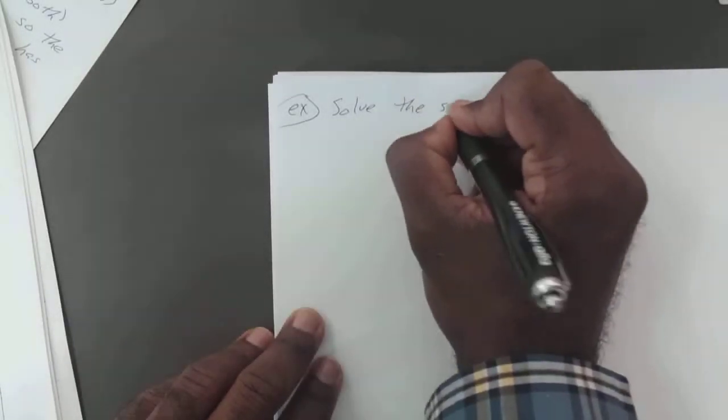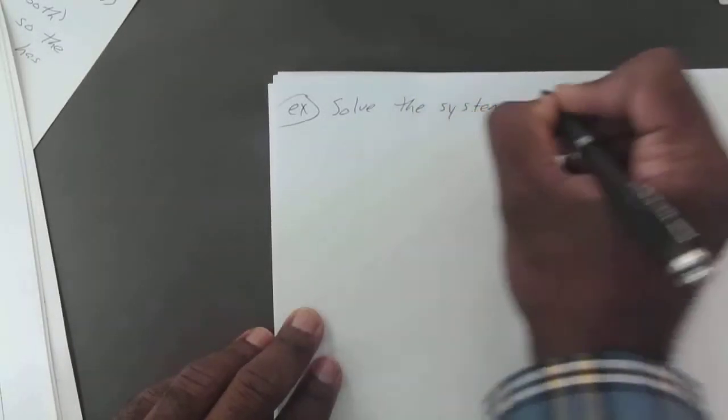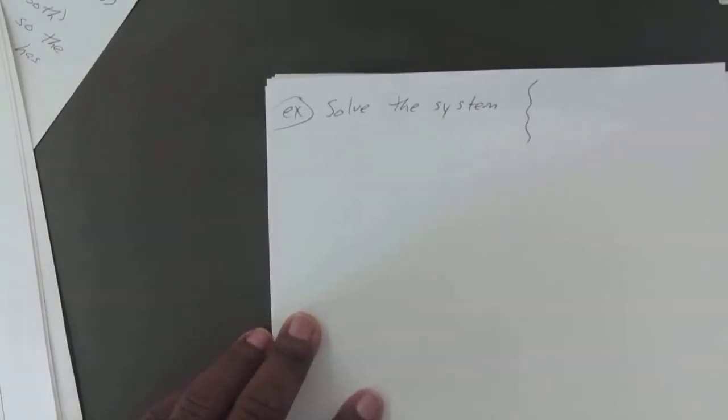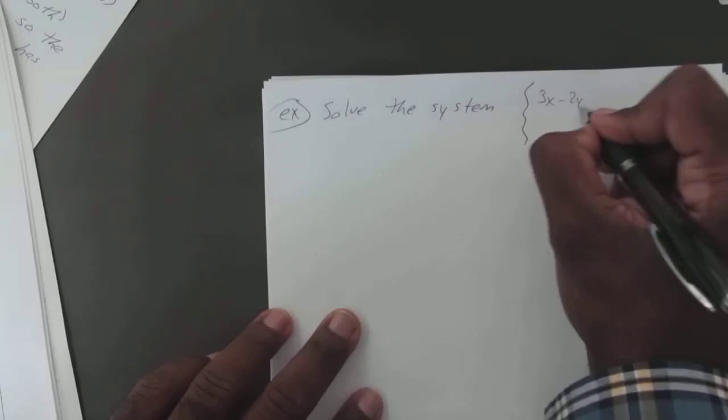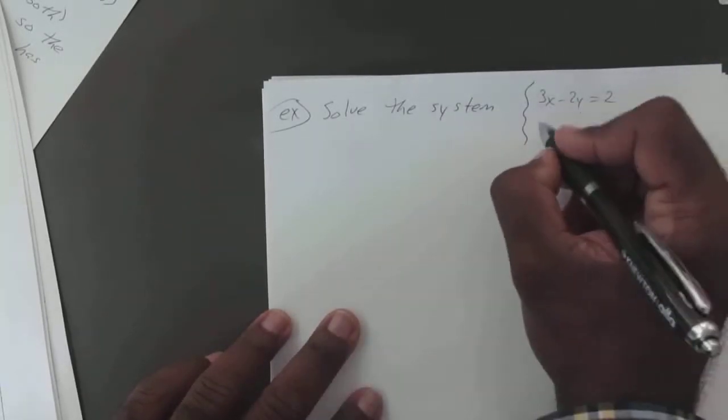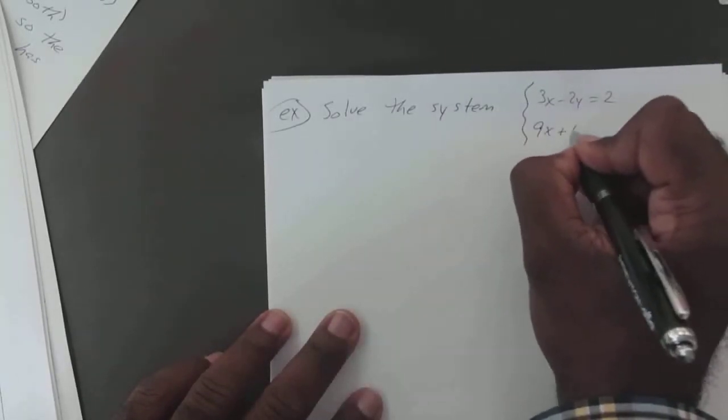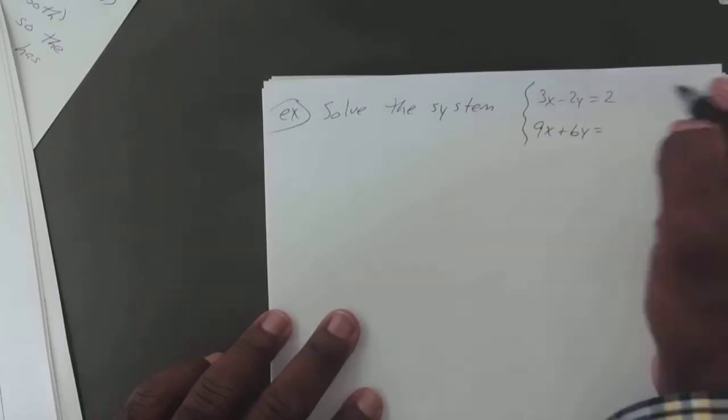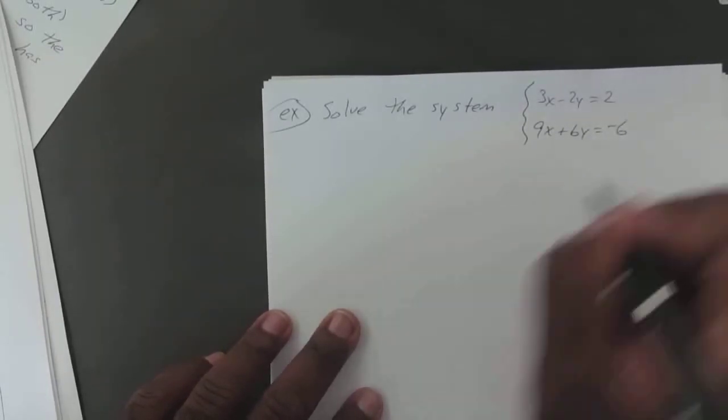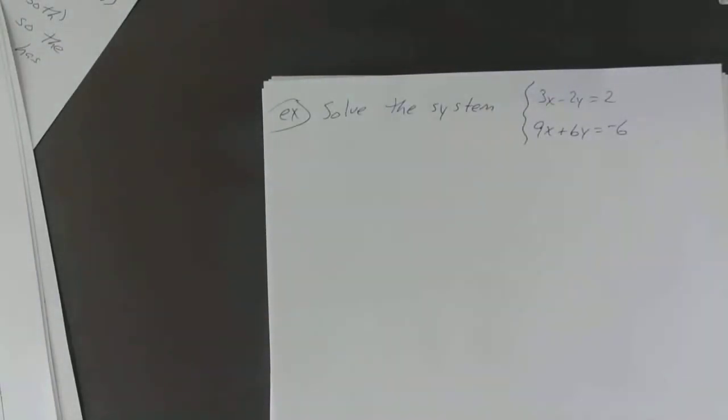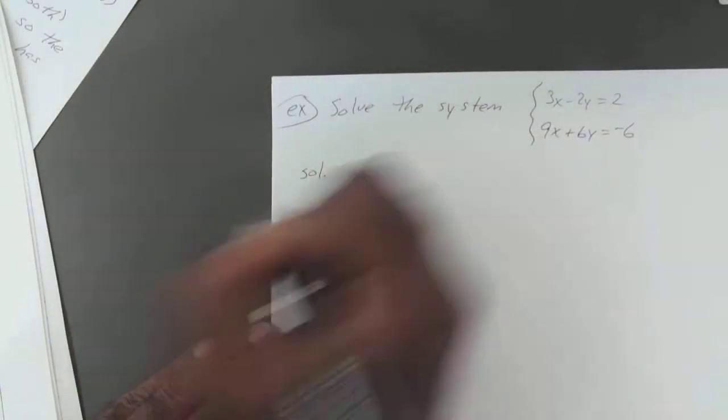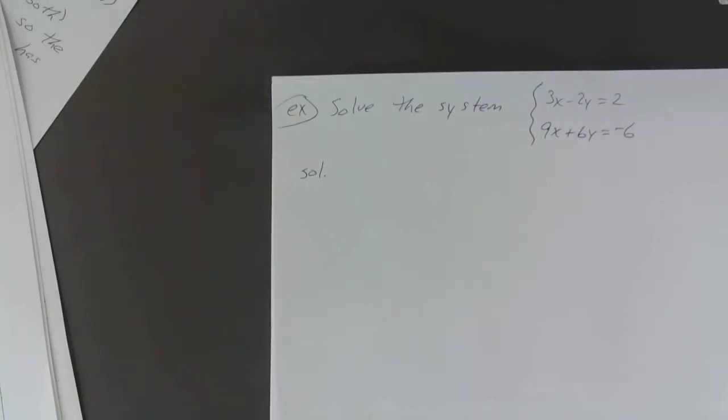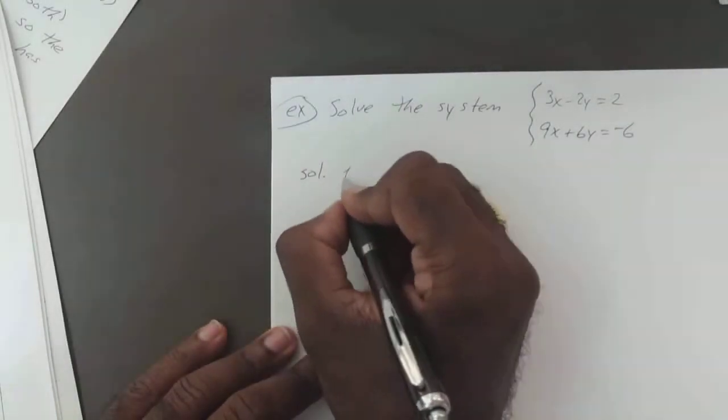So we're going to solve the system: 3x minus 2y equals 2, and 9x plus 6y equals negative 6. Once again, all the variables are already on the left-hand side, so it's already in standard form.